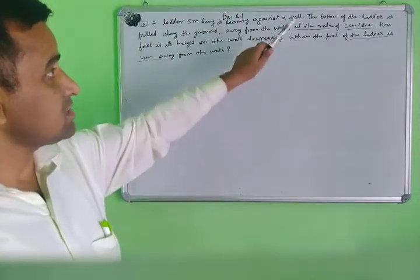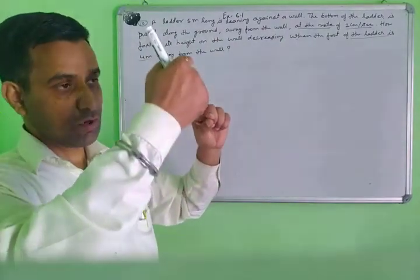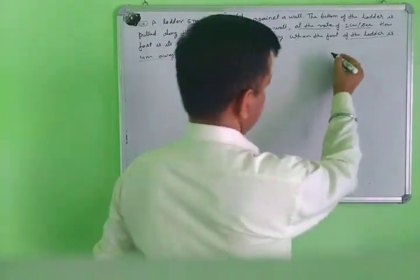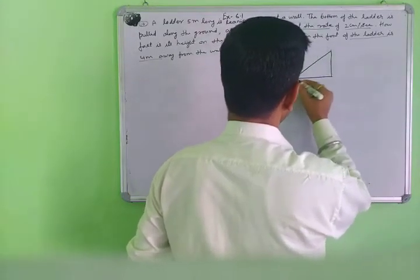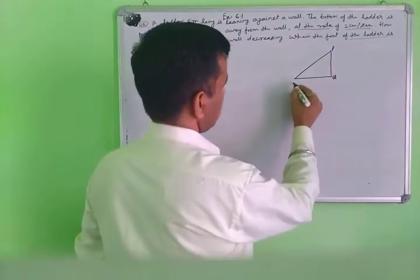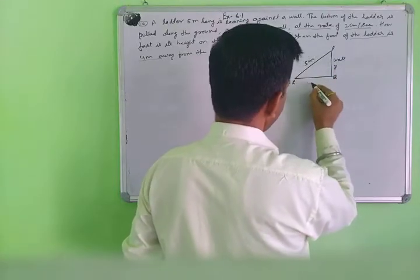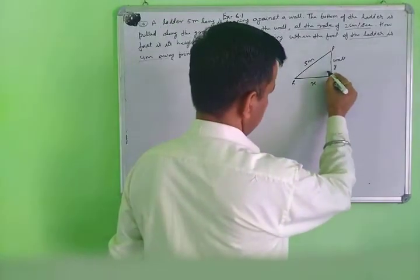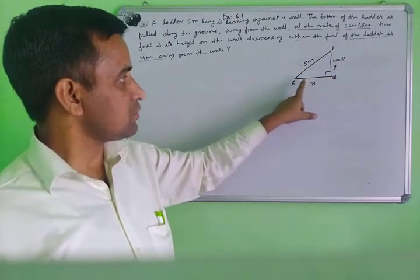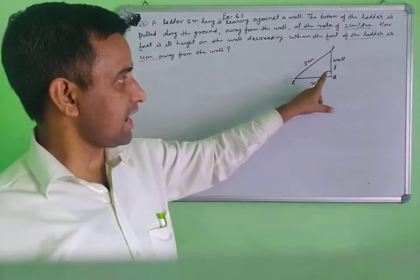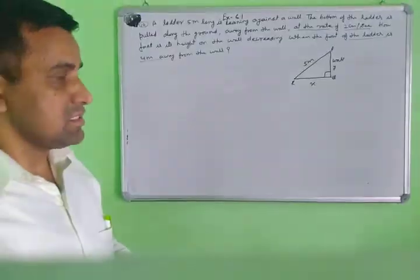First read the question very carefully, then identify what is given and what you need to find. The wall is in height shape and the ladder leans against it. Here, suppose this is PQR — the ladder is 5 meters. This is the wall with height y, and x is the distance along the ground. The height of the wall is y, and the distance between the bottom of the ladder and the bottom of the wall is x. The length of the ladder is 5 meters.